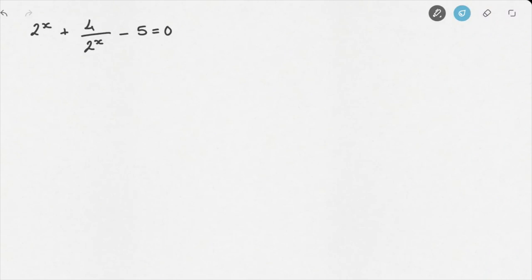In this video, we'll be learning how to solve a typical exam-type question involving exponential equations along with quadratic equations. We're given this equation to solve: 2 to the power of x plus 4 over 2 to the power of x minus 5 equals 0.